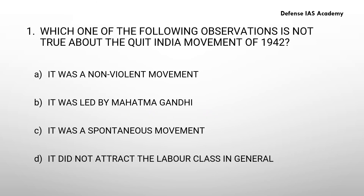Question number 1. Which one of the following observations is not true about the Quit India movement of 1942? Option A: it was a non-violent movement. Option B: it was led by Mahatma Gandhi. Option C: it was a spontaneous movement. Option D: it did not attract the labor class in general. The answer is option B: it was led by Mahatma Gandhi.